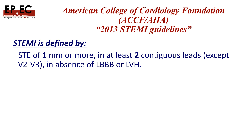The STEMI definition in the ACC/AHA guidelines is one millimeter or more anywhere on the ECG except V2 and V3, as long as you have two contiguous leads, in the absence of left bundle branch block or LVH. So this is very different — it is one millimeter or more.